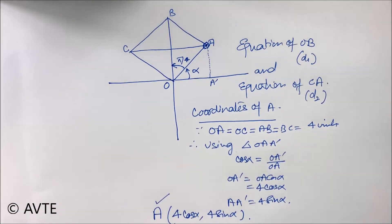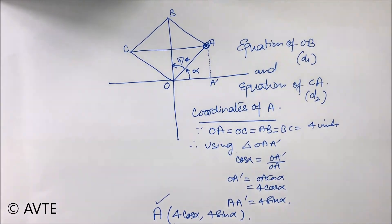Now we leave it here and we move on to the slope of a line, rather slope of a diagonal OB. So the diagonal OB is making a slope of tan alpha plus pi by 4, 45 degrees, because the angle between the diagonal and the side will be 45 degrees.